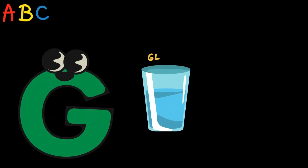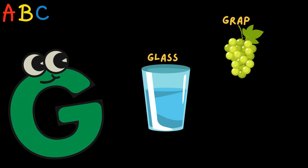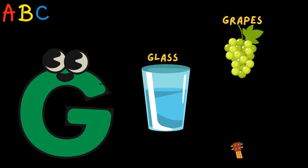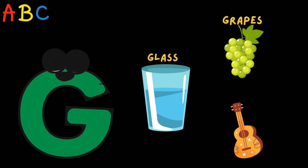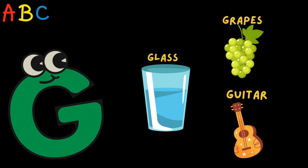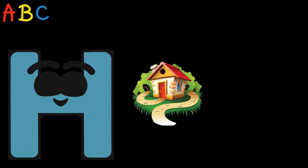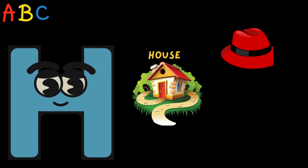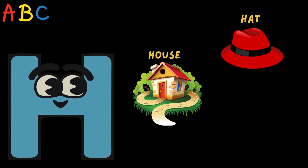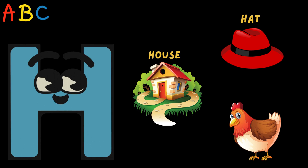G is for Glass, Grapes, Guitar. H is for House, Hat, Hen.